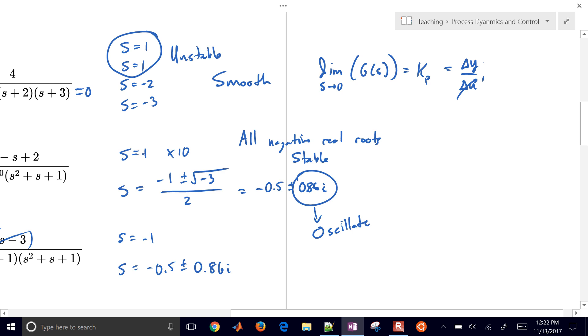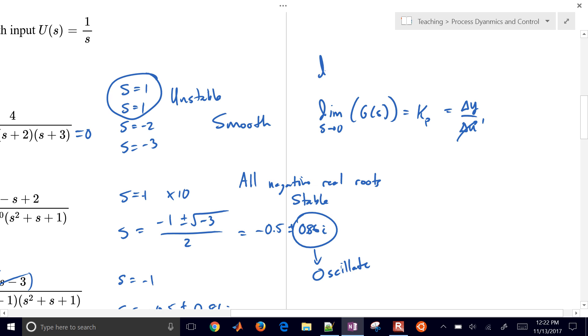So in this case, the gain and the delta y are going to be equal to each other. If you have a signal with final value theorem, we say s goes to 0, s times y of s.